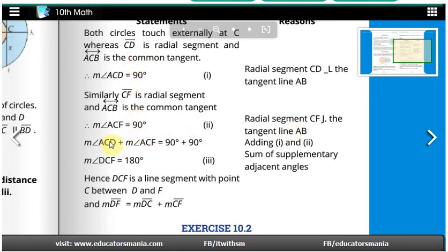Since both are 90 degrees, if we add equations one and two, we get angle ACD + angle ACF = 90 + 90.